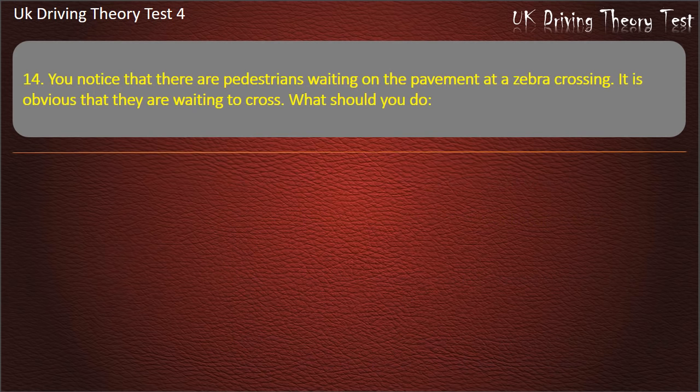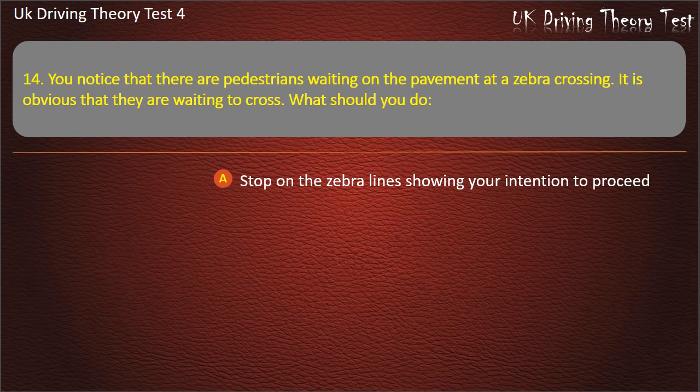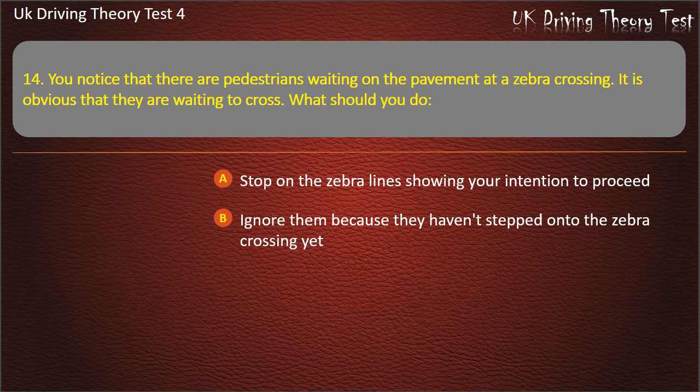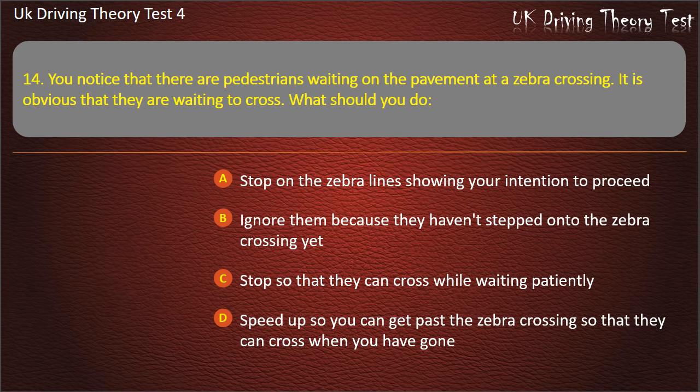Question 14. You notice pedestrians waiting on the pavement at a zebra crossing and it is obvious they are waiting to cross. What should you do? Stop on the zebra lines showing your intention to proceed; ignore them because they haven't stepped onto the crossing yet; stop so that they can cross while waiting patiently; or speed up to get past before they cross. Answer: Stop so that they can cross while waiting patiently.